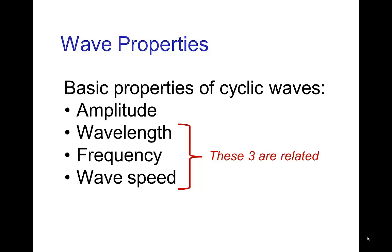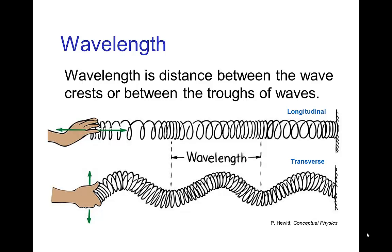What we'll see is those three properties are not independent, there's a connection among them. But first let's define what we mean by these properties. So the wavelength is basically the distance between wave crests or we can measure it as the distance between wave troughs, the bottoms of the waves.